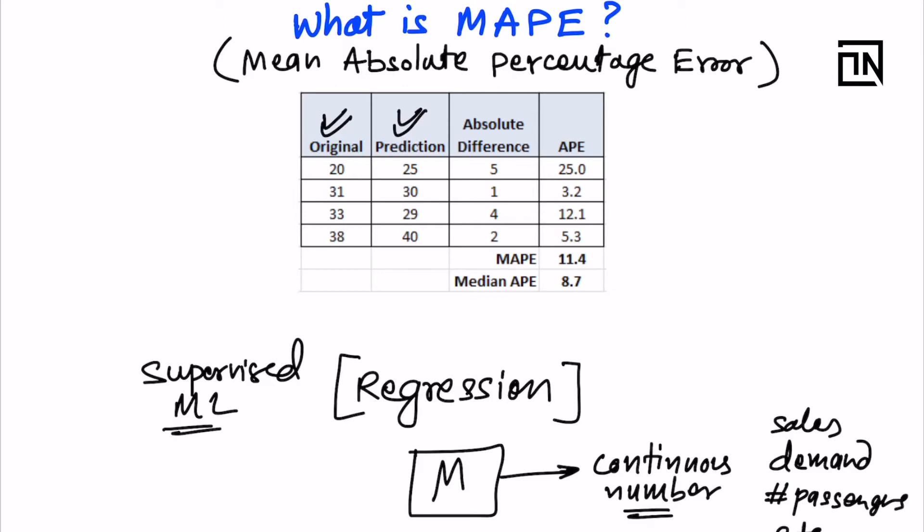So when you are trying to predict a number — let's say one month from now, what the number of passengers will be — you then compare that prediction with the actual value. How do you know how good or how accurate your prediction was? This is where absolute percentage error comes into picture. For example, take the second row in the table: the original number of passengers was 31 and you had predicted 30.